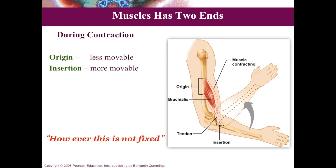A muscle has two ends: origin and insertion. When a muscle contracts and produces movement at a joint, one bone moves more compared to the other. The part of the muscle attached to the fixed or less mobile bone is called the origin, and the part attached to the more mobile bone is called the insertion. Usually origin is proximal and insertion is distal, but this is not fixed — origin and insertion can be reversed in different movements.